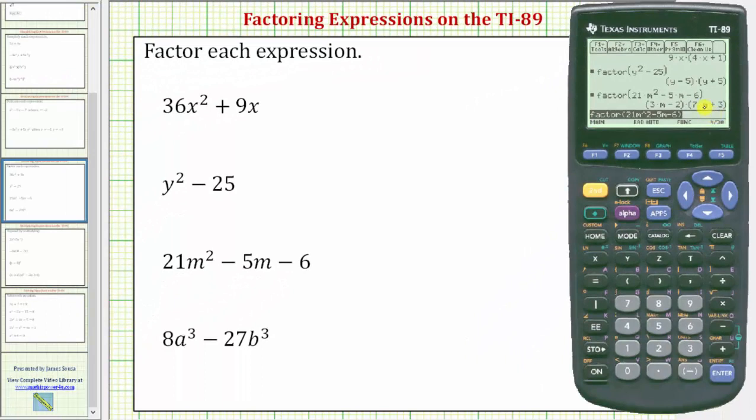And then finally, we want to factor 8a to the third minus 27b to the third. So we'll press F2, number 2 for factor. And we'll enter 8. A is going to be alpha equal sign, raise to the power of 3, minus 27b is alpha, and then this parenthesis here. Raise to the power of 3, close parenthesis and enter.